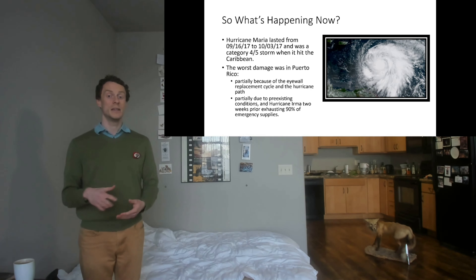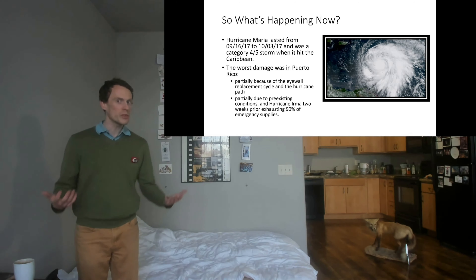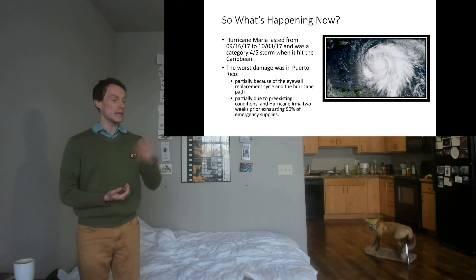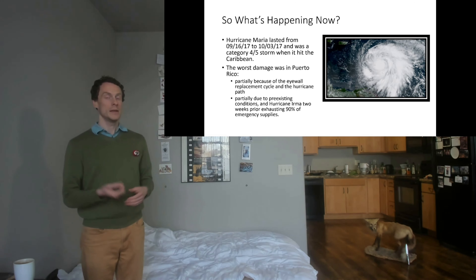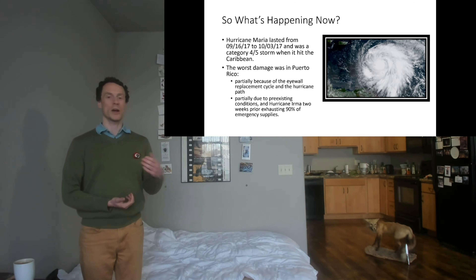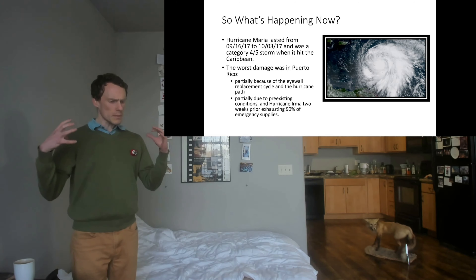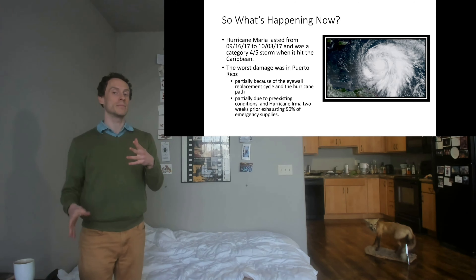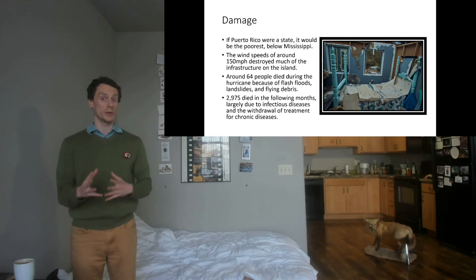The damage was also due to pre-existing social, political, and environmental factors. Two weeks before Hurricane Maria there had been another hurricane that had exhausted a lot of their emergency supplies. One thing we're realizing across the world now is that even though there's one disaster occurring, that's not stopping other disasters — there are still tornado warnings and hurricanes going on even as we tackle a pandemic.